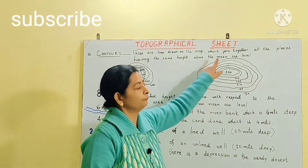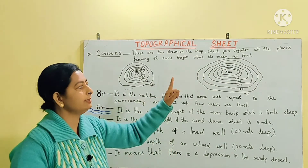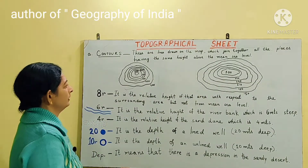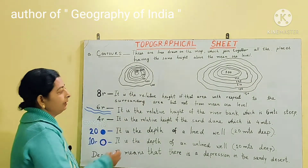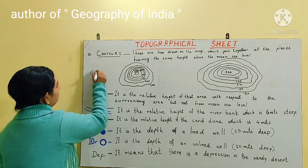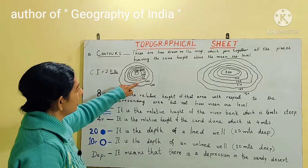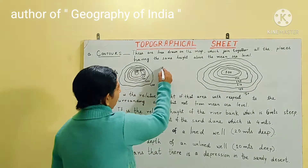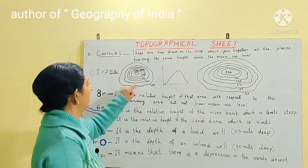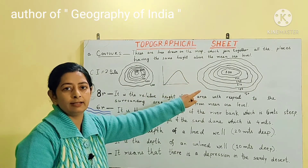Contours are lines drawn on a map that join together all places having the same height above mean sea level, where mean sea level is taken as zero. For example, if contour values are 400, 420, 440, 460, 480, and 500 meters, the contour interval is 20 meters. When the contour lines are very close together, the feature formed is a conical hill with a very small tip area, indicating a steep slope.